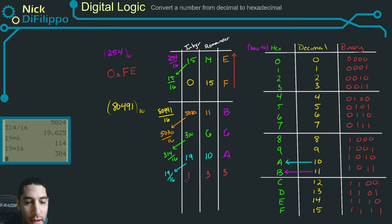Take this one, bring it over here and do one divided by 16. Now our integer is zero. Our remainder is one.